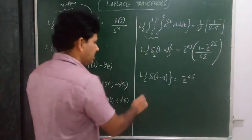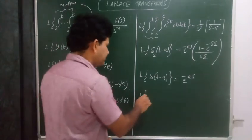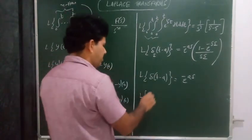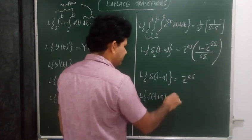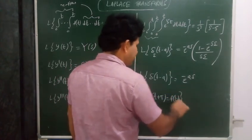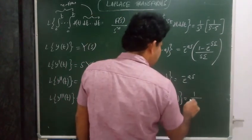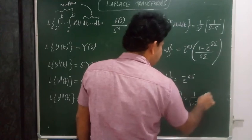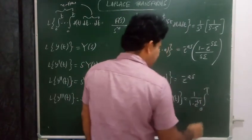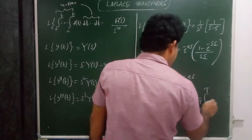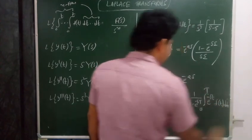The Laplace transform of a periodic function with period T equals 1 over (1 minus e to the power minus sT) times the integral from 0 to T of e to the power minus st times f(t) dt.